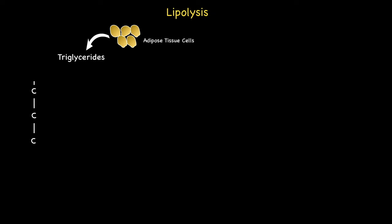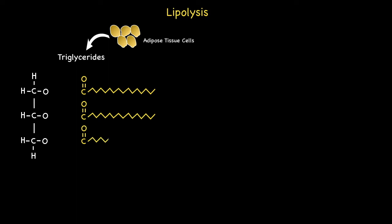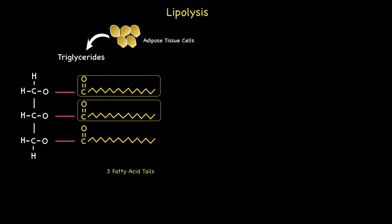Let's begin with the glycerol backbone, next the three fatty acid tails, and finally the three ester bonds that link these three fatty acid tails to the glycerol backbone. So in summary the major components of a triglyceride are the three fatty acids, a glycerol backbone, and the three ester bonds.